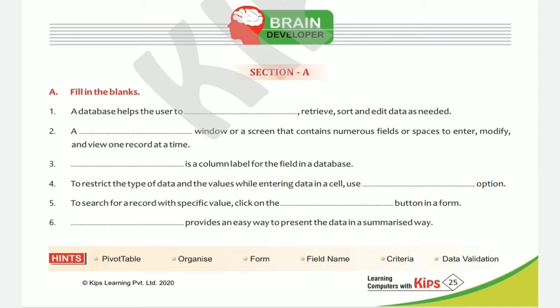Fourth: to restrict the type of data and the values while entering data in a cell, use the dash option. Which option restricts the type of data and values while entering data in a cell? The answer is Data Validation.